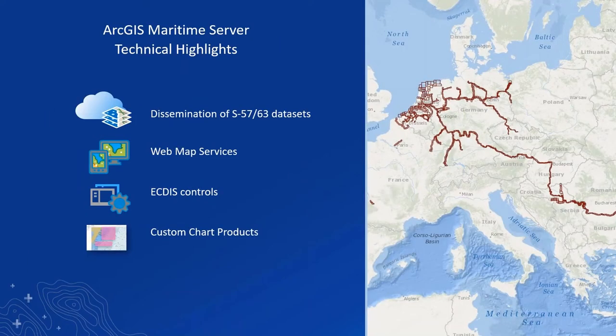Today's presentation will focus on ArcGIS Maritime Server, an ArcGIS for Server extension with two main capabilities. First, Maritime Chart Service, where we publish web services using S-57 and S-63 datasets. Second, products on demand, to create custom chart products as well as traditional paper chart products. As part of the Esri Geospatial Cloud, ArcGIS for Maritime Server applications support transportation, ports, energy, science, defense, coastal zone management, and the management of international boundaries and national assets.